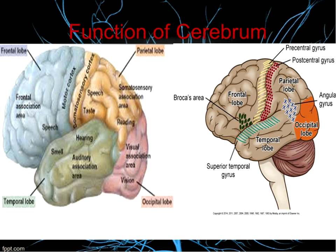The temporal lobe contains our auditory data, interpretation of some visual data, and Wernicke's speech area, which has to do with understanding language — important when we later discuss stroke. The parietal lobe interprets our spatial information and contains the sensory cortex. The occipital lobe, located at the back, is the endpoint of the optic tract and is where we process sight.